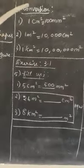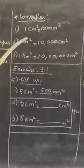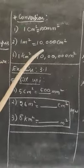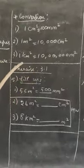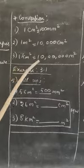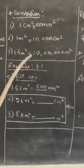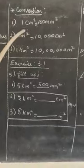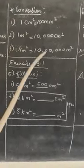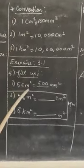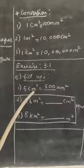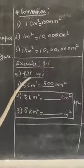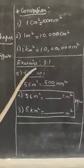Next is conversion. One centimeter square is equal to 100 millimeter square. One meter square is equal to 10,000 centimeter square, and one kilometer square is equal to 10 lakh meter square. This is the formula for conversion. You can use this to do the homework for the second and third problems in problem number 5 in Exercise 3.1.